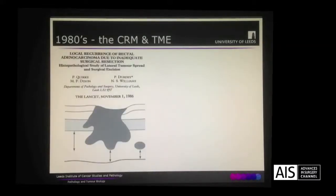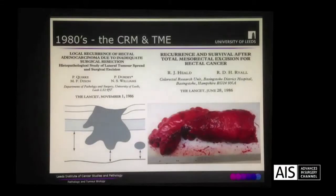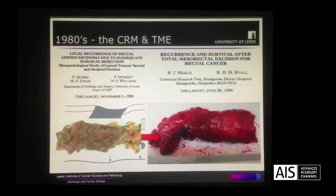In the 1980s, Phil Quirk and colleagues in Leeds described the importance of tumour clearance at the circumferential resection margin, showing that incomplete tumour removal led to a high rate of local recurrence. This coincided with the time that Bill Heald and colleagues described the concept of total mesorectal excision for adequately removing rectal cancers. In pathology departments around the world we started to see less and less of the old style disrupted mesorectal excisions and more and more of the nice total mesorectal excisions as described by Bill Heald.